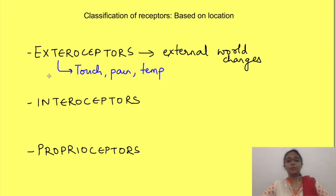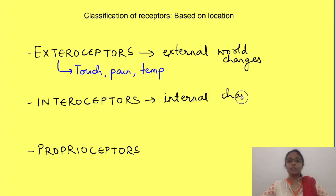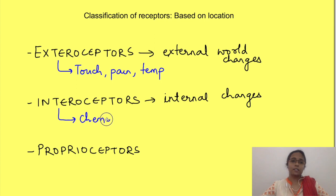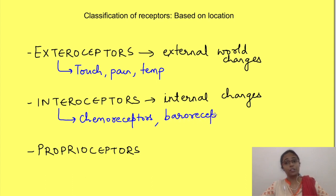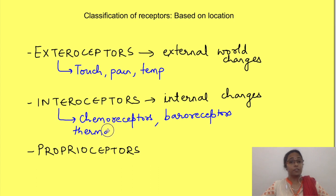Interoceptors are located inside the body and sense changes within the body. For example, chemoreceptors detect changes in oxygen and carbon dioxide levels in the blood and in turn affect respiration. Baroreceptors detect changes in blood pressure, and there are also thermal receptors inside the body that detect core body temperature.